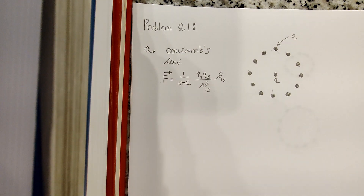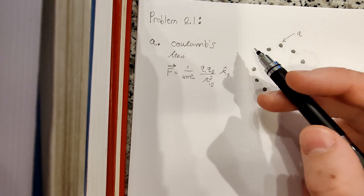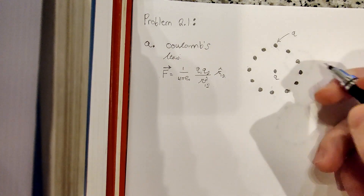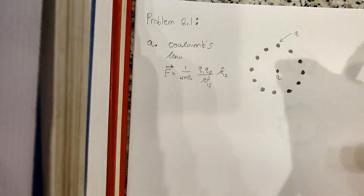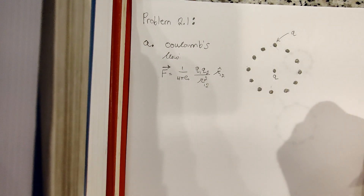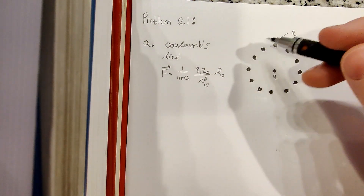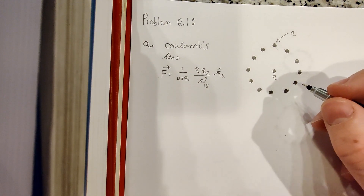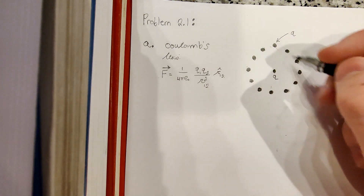Let us start with Part A. It says that we have 12 equal charges Q situated at the corners of a regular 12-sided polygon — for instance, one on each numeral of a clock face. I've tried to draw 12 equal charges here on a polygon. Just picture that these are 12 equally, perfectly equally spaced charges around a clock face surrounding this center charge Q. We want to find out what the net force is on a charge sitting at the center of this clock face due to all of these other charges.